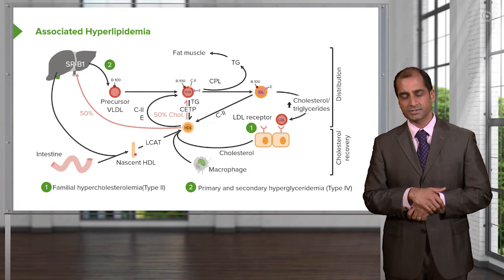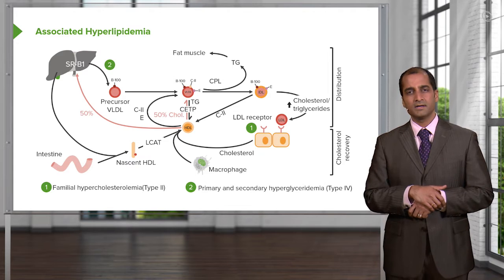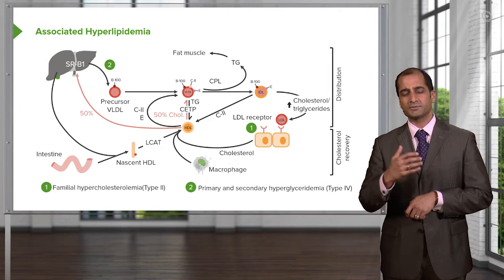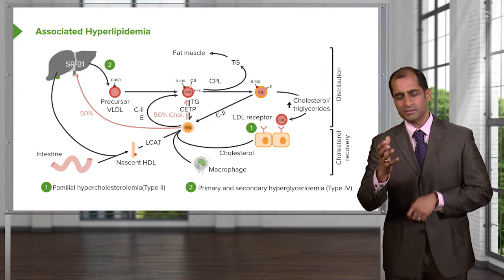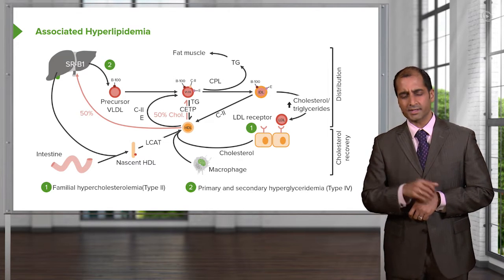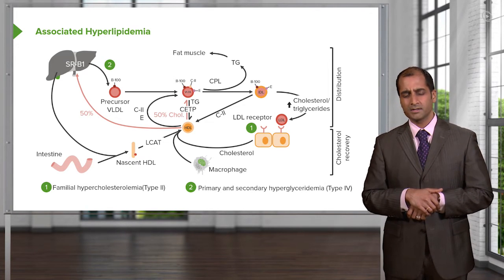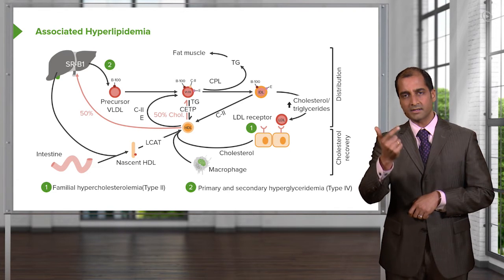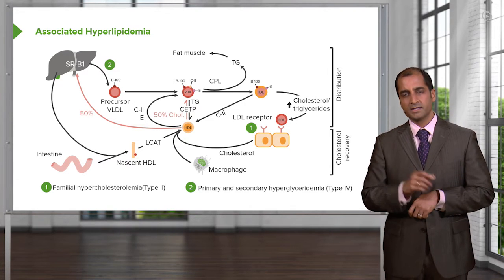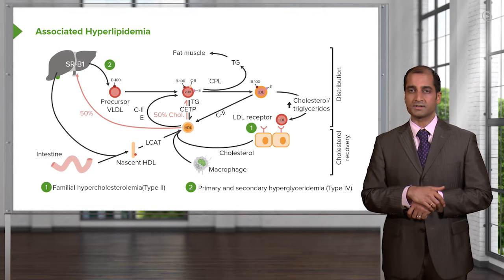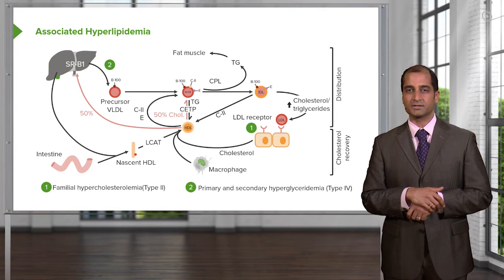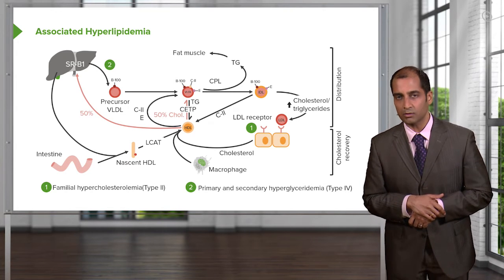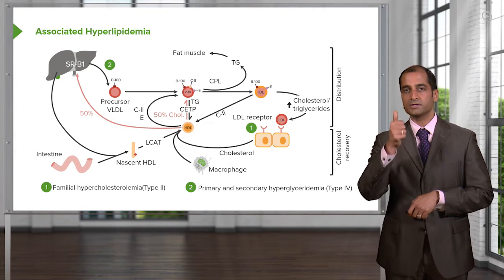What tissues? Picture the adrenal cortex. What are the layers? G, F, and R — glomerulosa, fasciculata, reticularis. Tell me about that reticularis. What are you producing, reticularis? Cortisol.